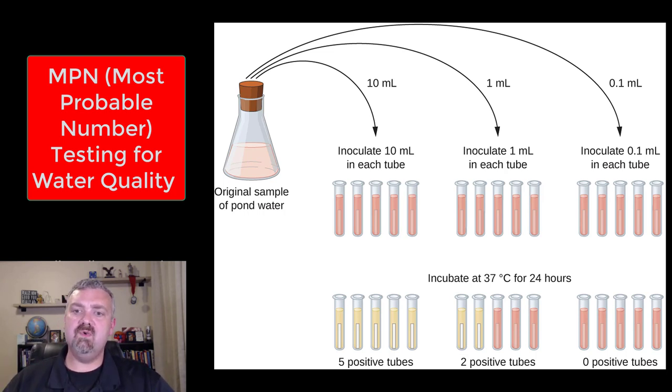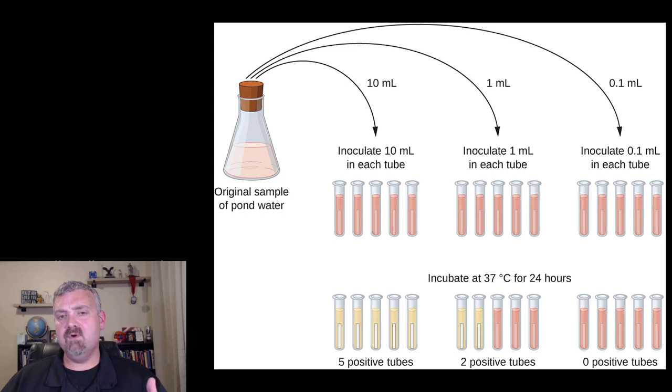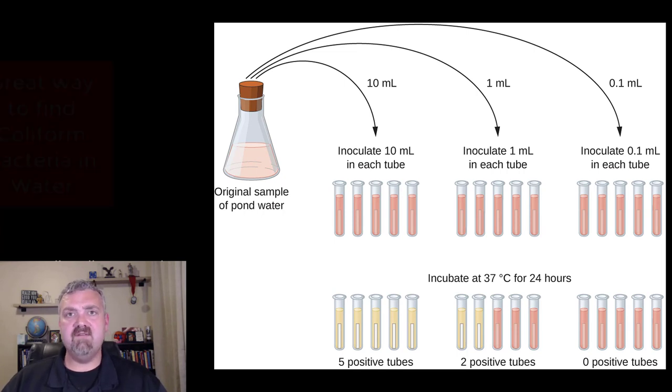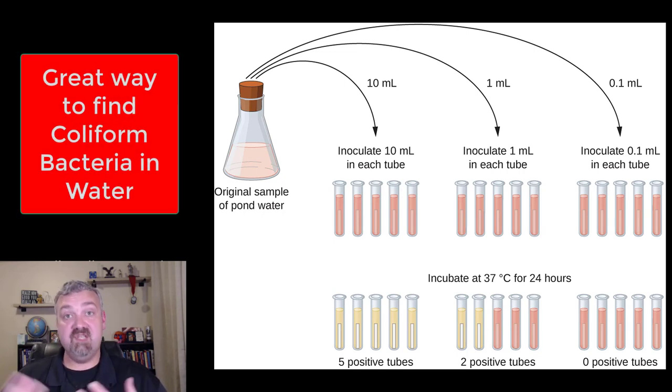The MPN method is used when you have really dilute samples or you have samples where you can't get the microbes to grow on solid media. But the most important time you would use this is if you're looking for coliforms, which E. coli is an example of, in water quality samples. It can be used in food testing as well.